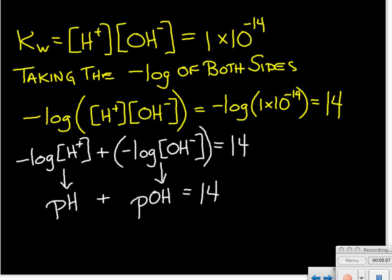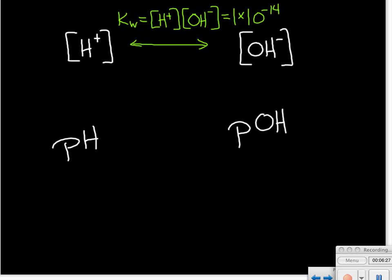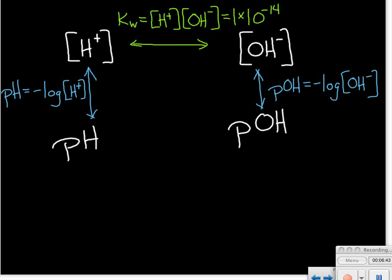That formula will come in quite handy as we go through other calculations. One of the things you'll be required to do is go back and forth between the variables: the hydrogen ion concentration, the hydroxide ion concentration, the pH, and the pOH. To go between the concentrations of the two ions, use the K sub W equilibrium expression. To go between the hydrogen ion concentration and the pH, use the pH formula, and likewise for pOH. And the last equation we derived says that pH plus pOH must add up to 14. If you want example problems, there's another video that works through examples involving all of these variables.